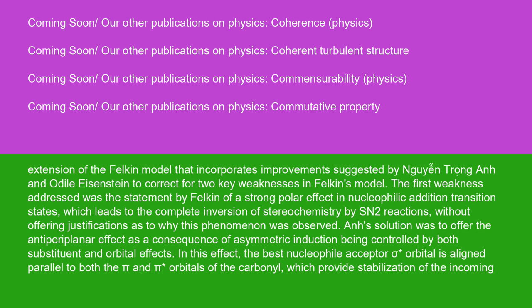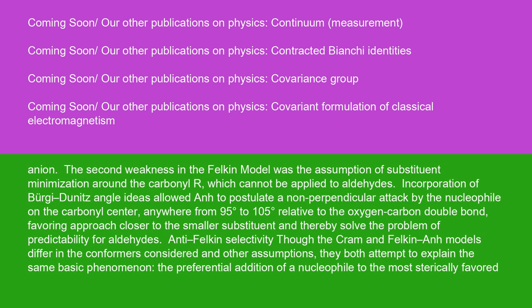In this effect, the best nucleophile acceptor σ* orbital is aligned parallel to both the π and π* orbitals of the carbonyl, which provides stabilization of the incoming anion. The second weakness in the Felkin model was the assumption of substituent minimization around the carbonyl R, which cannot be applied to aldehydes. Incorporation of Bürgi-Dunitz angle ideas allowed Anh to postulate a non-perpendicular attack by the nucleophile on the carbonyl center, anywhere from 95 to 105 degrees relative to the oxygen-carbon double bond, favoring approach closer to the smaller substituent and thereby solving the problem of predictability for aldehydes.